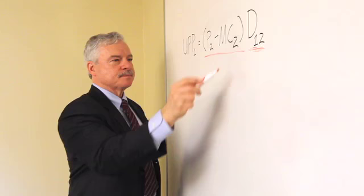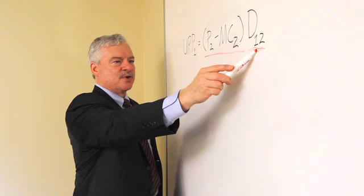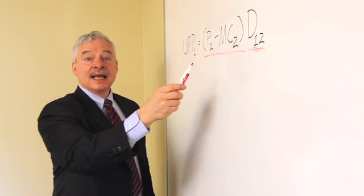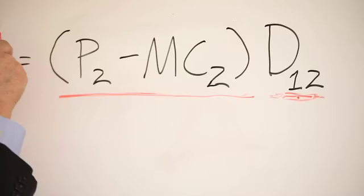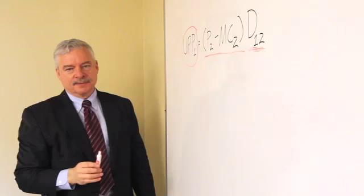So the product, the fraction of sales that are diverted from firm one to firm two, times the markup on those sales is the value of diverted sales or upward pricing pressure.